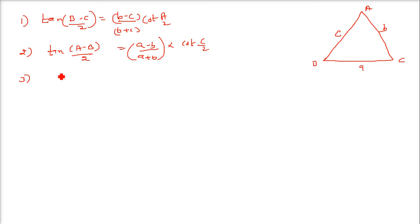The third one would be tan of (c minus a) by 2 will be equal to (c minus a) by (c plus a) cot b by 2.